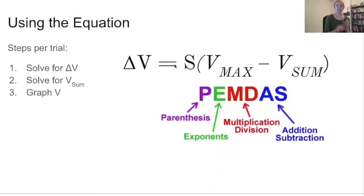So to use this equation, we're going to use it in specific trials and do one trial at a time. So for each trial, the first step is going to be to solve for delta V. So figure out what the change that is specific to this trial is. The next step is going to be to solve for the new V sum. So at the end of each trial, there will be a new V sum for you to work with in subsequent trials. And then lastly, you're going to graph V so that you can look at the change in associative strength across trials, because that's one of the reasons you might use this equation is to look at change over time in the strength of that response.